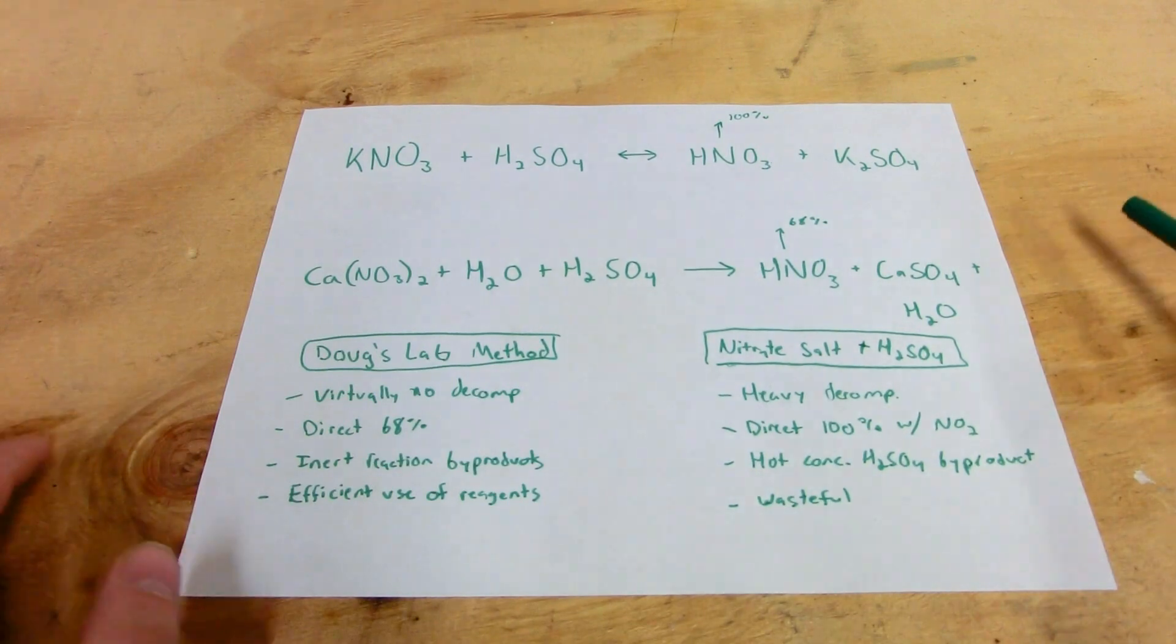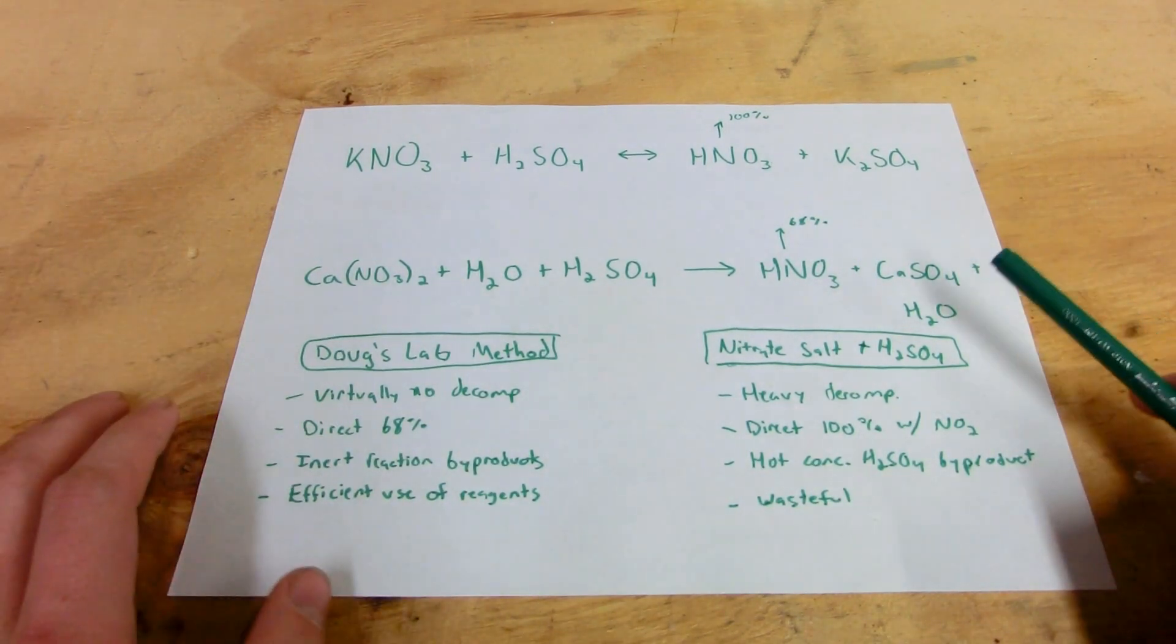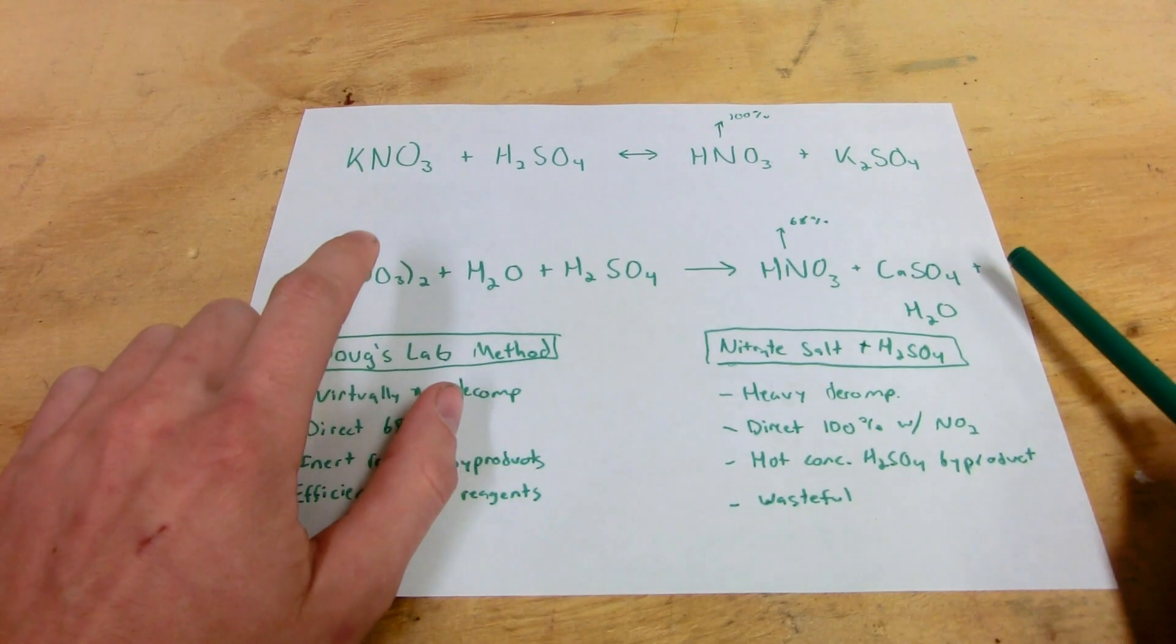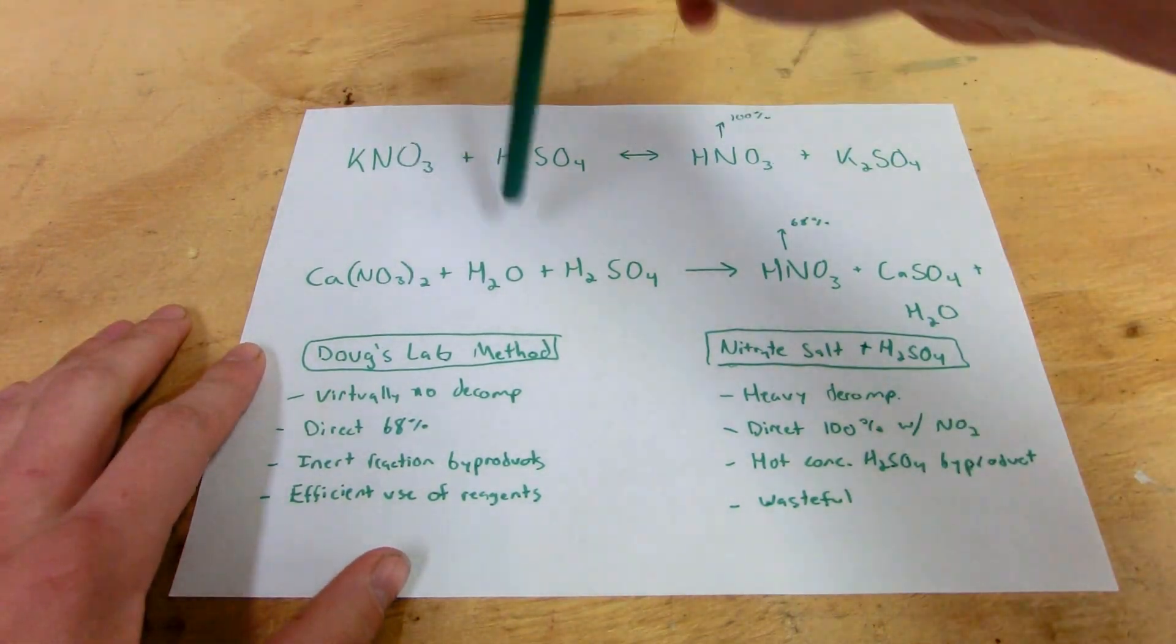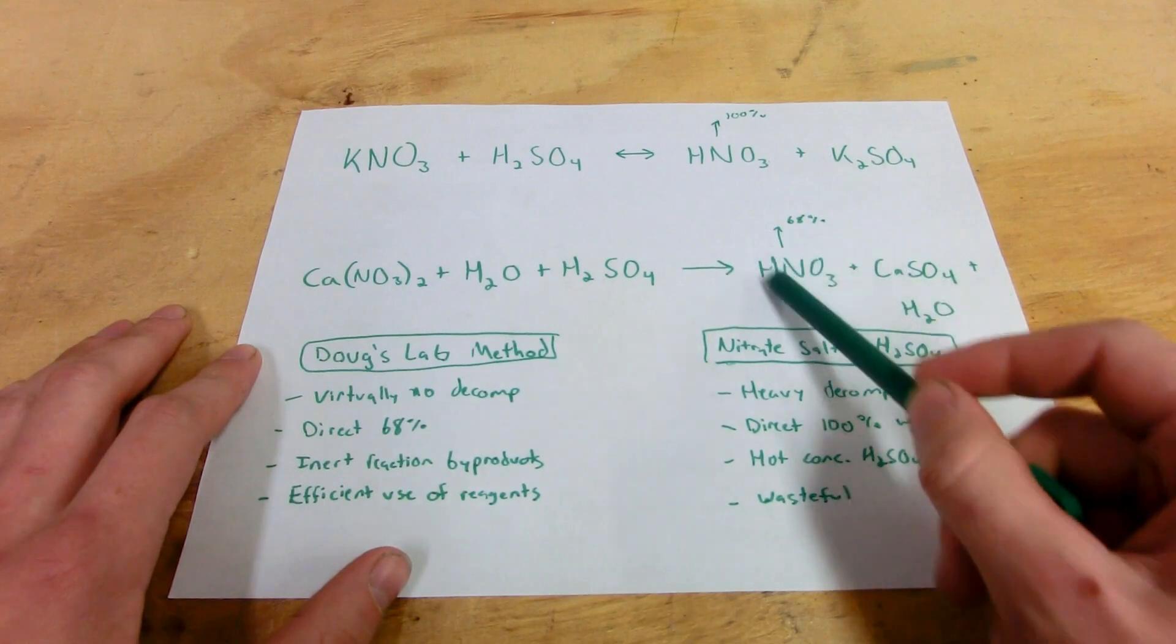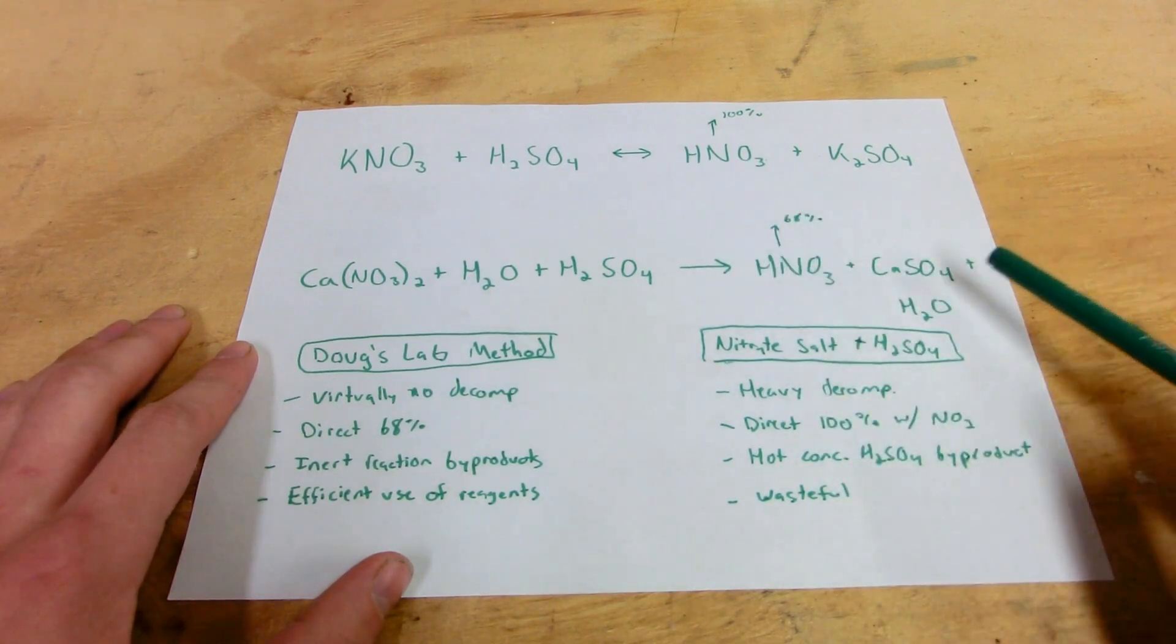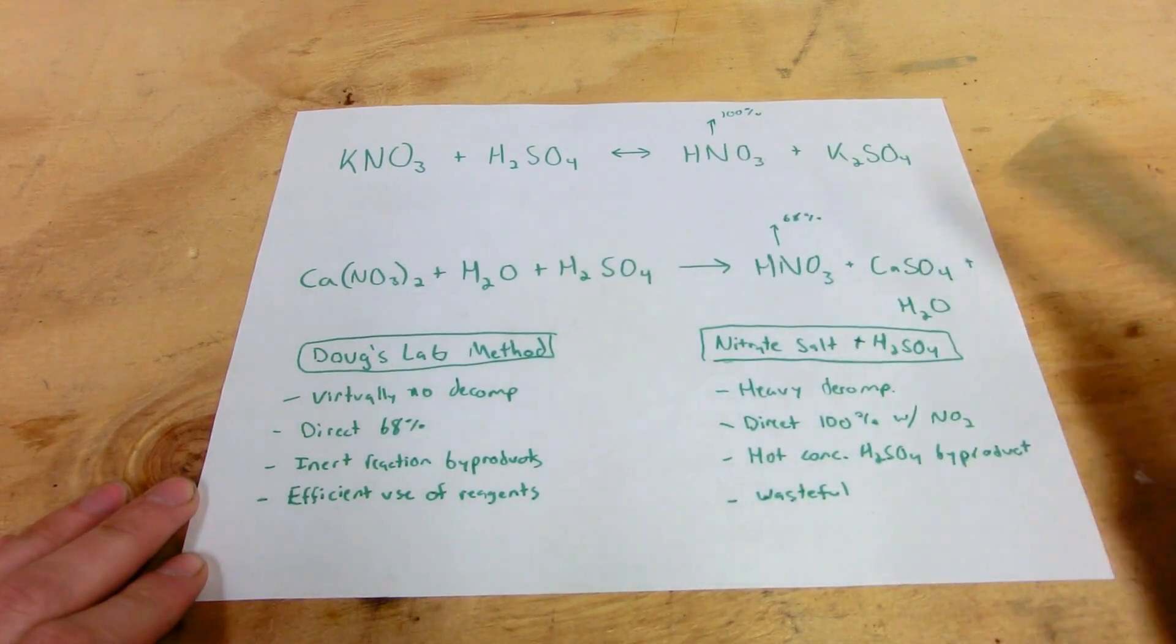The nitric acid gets very hot on the bottom and decomposes to that brown nasty nitrogen dioxide gas that you see coming out of most nitric acid synthesis pots. It's kind of an inefficient method. You have to use excess sulfuric acid to keep this a liquid and your nitric acid that comes out is decomposing. And no one really ever uses 100% nitric acid except for a few things. If you need 100%, you can always synthesize it right before you use it because storing 100% nitric acid is also problematic in that it decomposes.